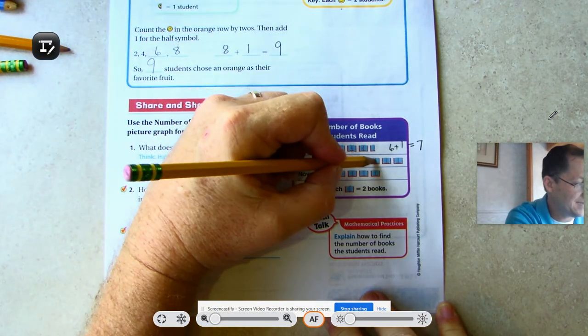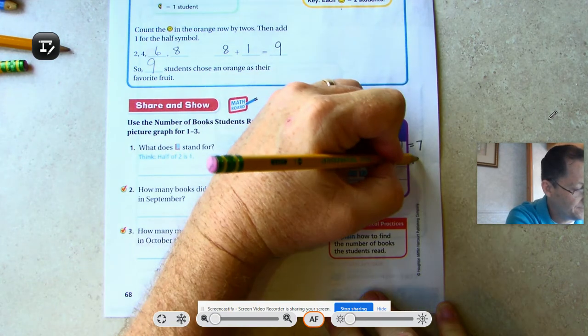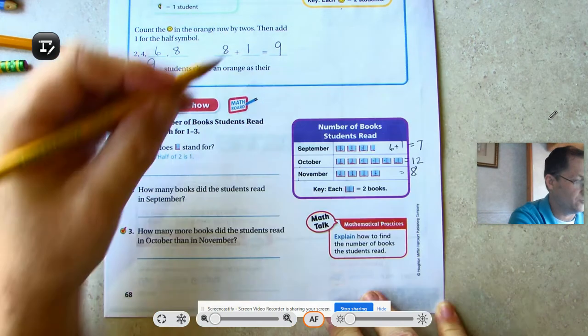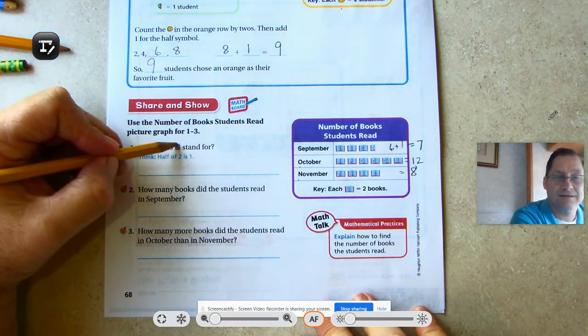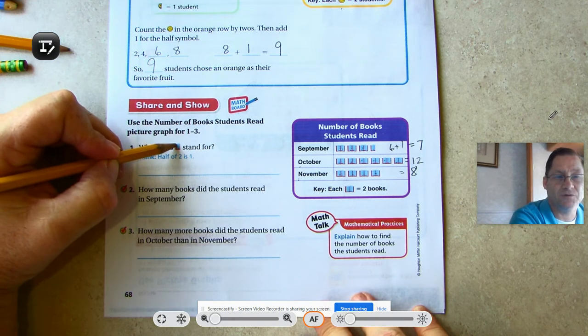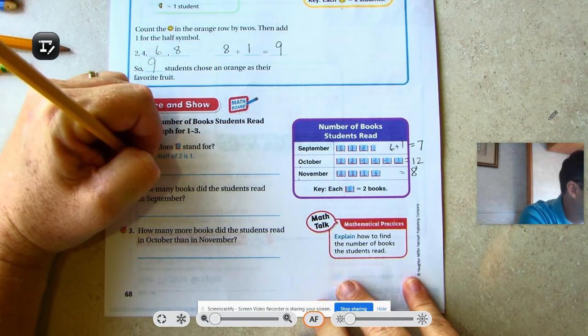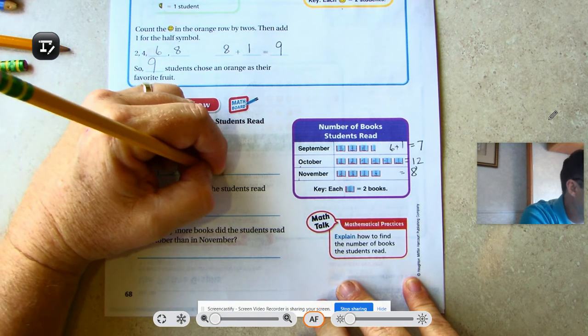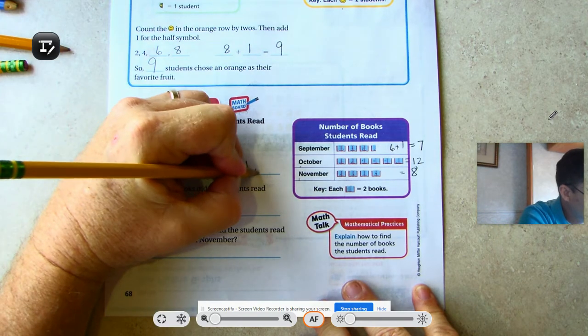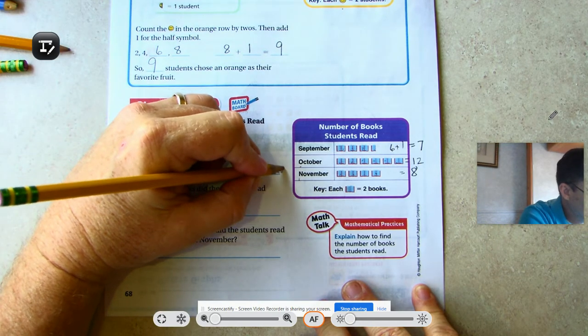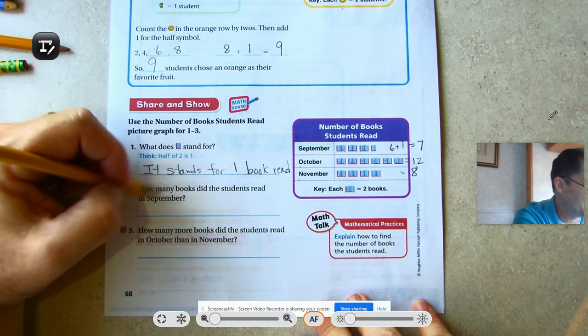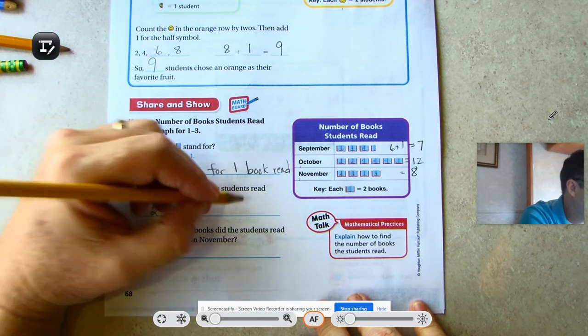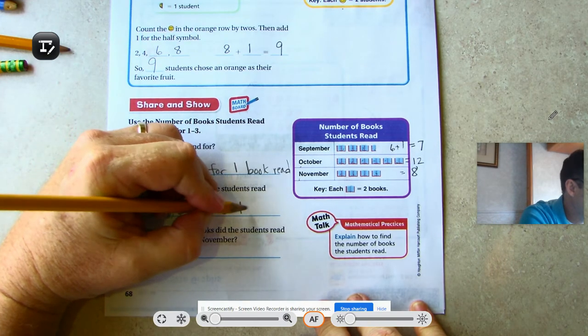2, 4, 6, 8, 10, 12 books in October. 2, 4, 6, 8 books in November. What does half of the symbol stand for? It stands for one book read. How many books did the students read in September? 2, 4, 6, plus one, seven.